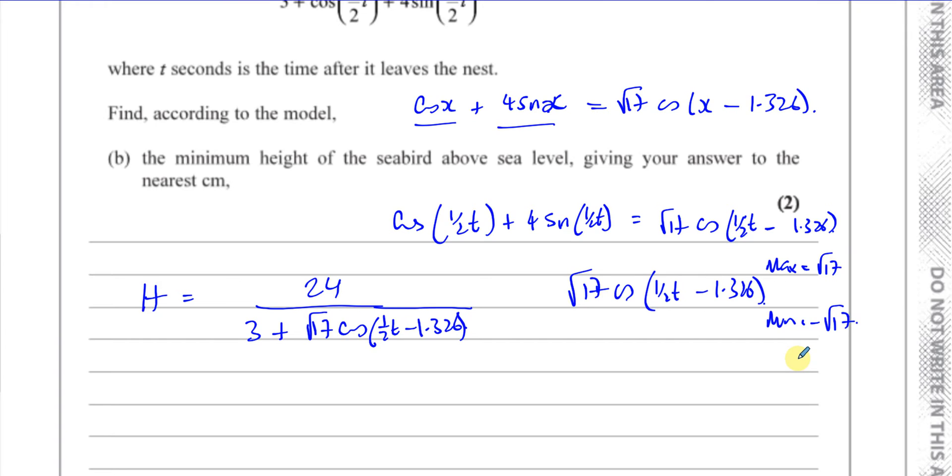So if I want to find the minimum height of the seabird above sea level, I need to find the biggest possible denominator, because if I make the denominator as big as possible, then the value of the height will be small, because I'm dividing 24 by something as big as it can be. So I need to take the maximum possible value of the denominator, which is going to be 3 plus root 17. 24 over 3 plus root 17 will give me the minimum height.